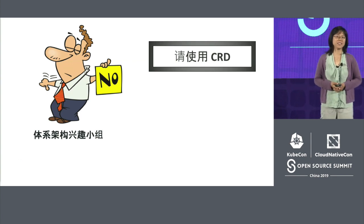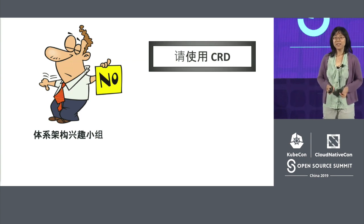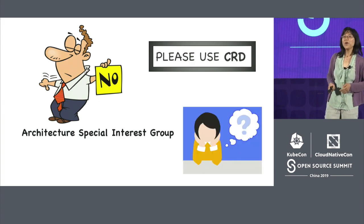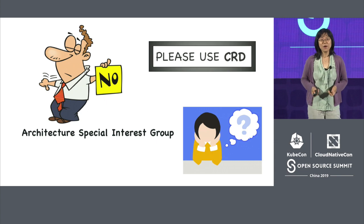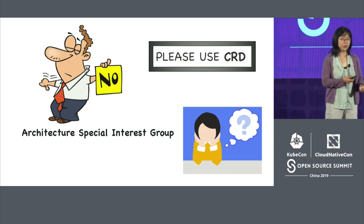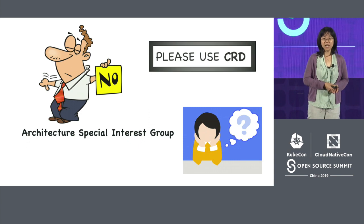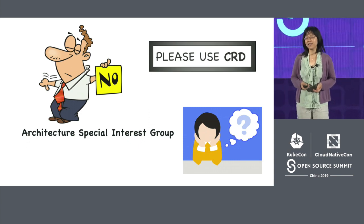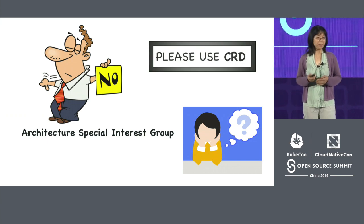Guess what? We got rejected. They told us no, and to use CRD instead. At that time we had many questions: Why push us out? Why do we have to do this out-of-tree with CRD? Isn't that for third-party application things? Does it mean our feature is not that important and should not be part of Kubernetes?